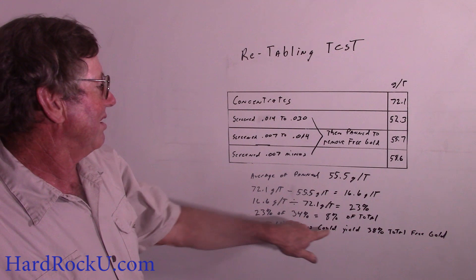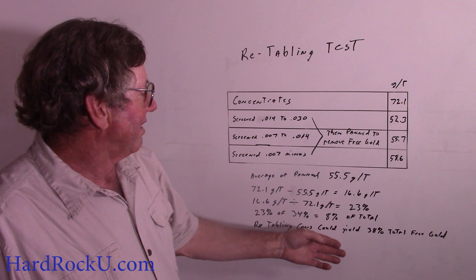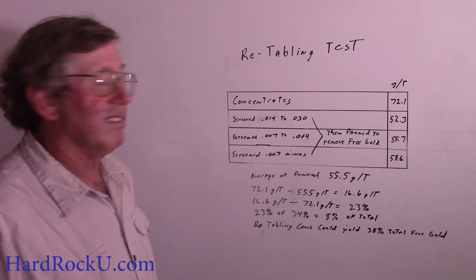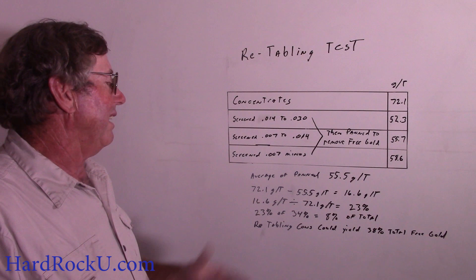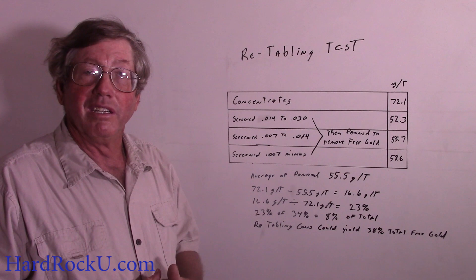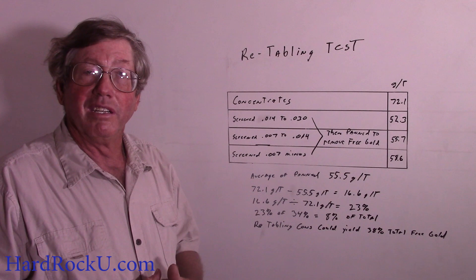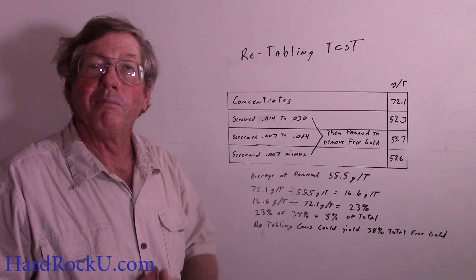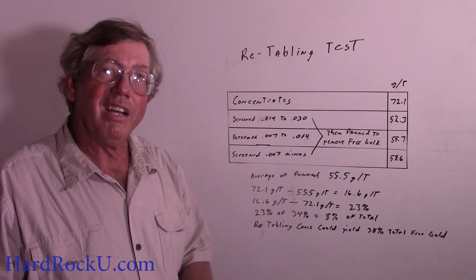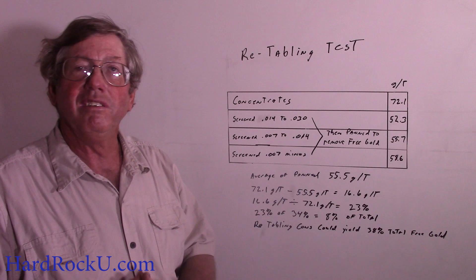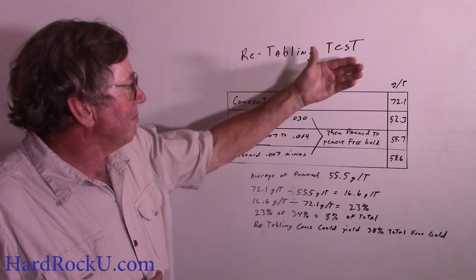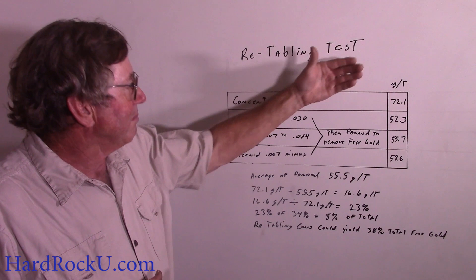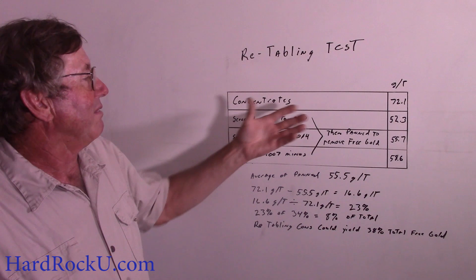23% of the 34% of the total gold in the sample that was in the concentrates gives you 8% of the total. So if you re-tabled the concentrates, even as they are, theoretically you could maybe jump your yield to 38% of the total entrained gold in the ore into your free gold. This can be useful because if you have enough gold in your concentrates, you can either recover it all or recover half and still have something a refinery would be happy to take. When you sell to a refinery you're going to get money back — that money is taxable. The free gold you recover, if you don't sell it, is not taxable until such time as you sell it. That can be very useful. You may want to put your free gold back into the concentrates if it's too low to trigger acceptance at the refinery.